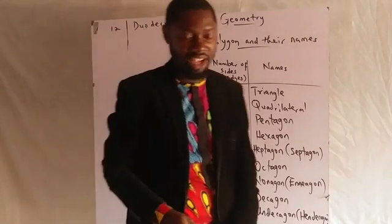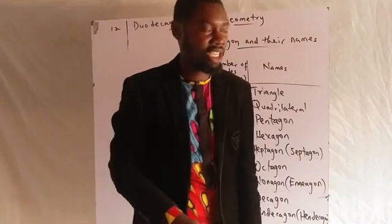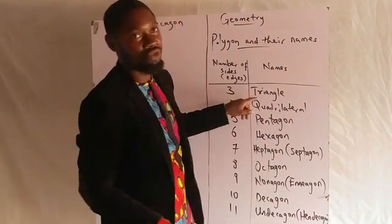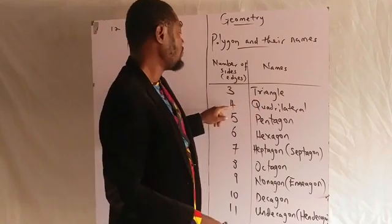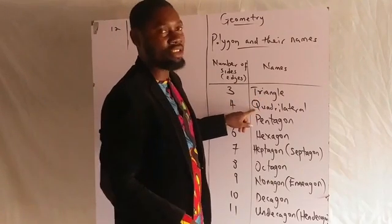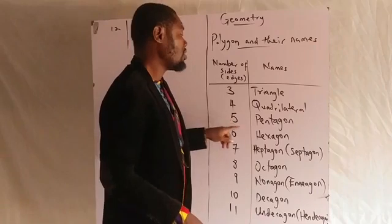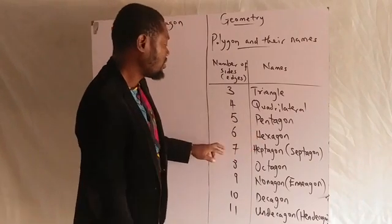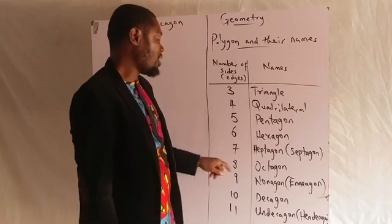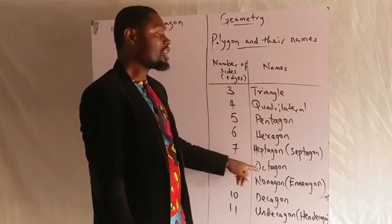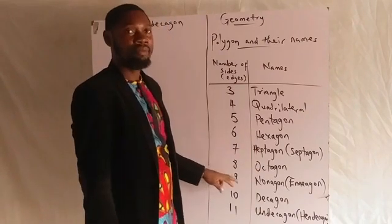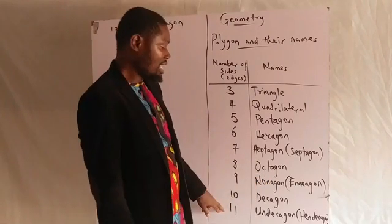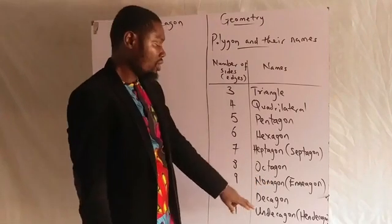So to summarize the full list: three sides — triangle; four sides — quadrilateral; five sides — pentagon; six sides — hexagon; seven sides — heptagon; eight sides — octagon; nine sides — nonagon; ten sides — decagon; eleven sides — undecagon; twelve sides — duodecagon.